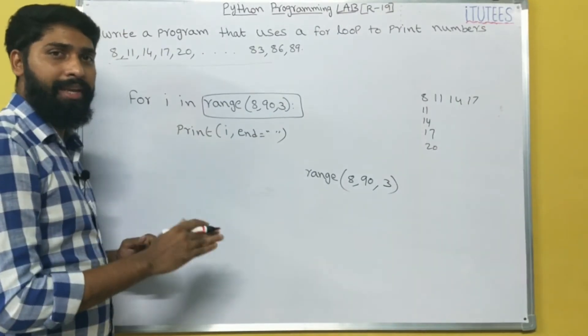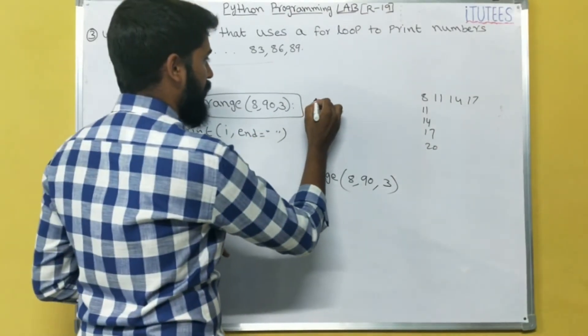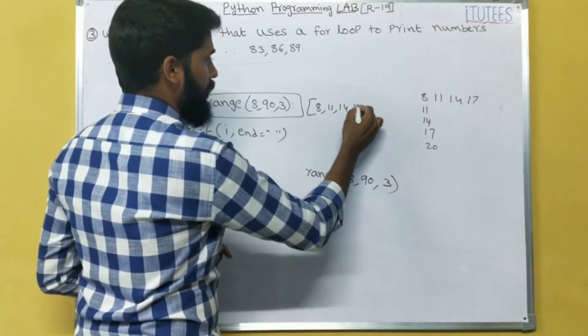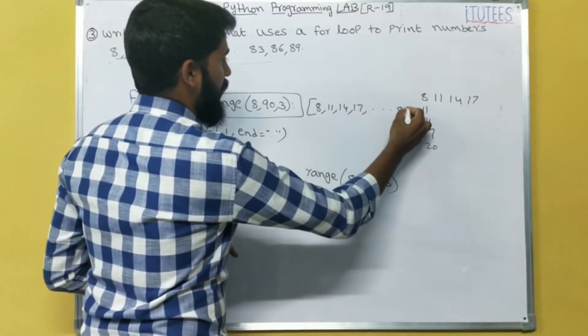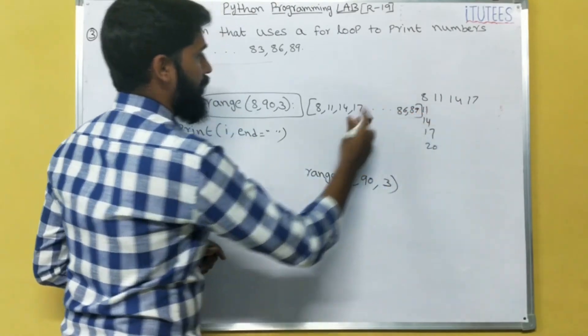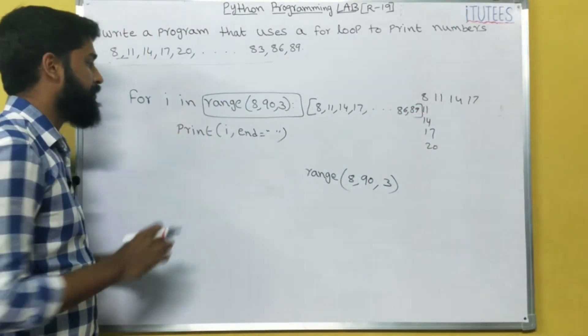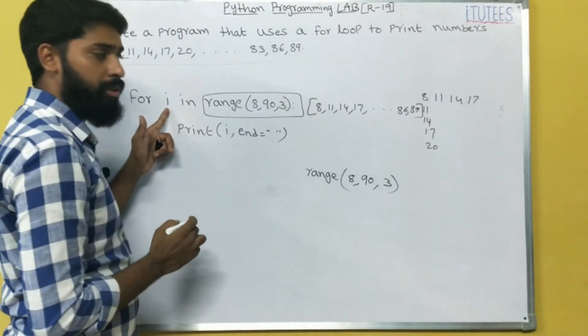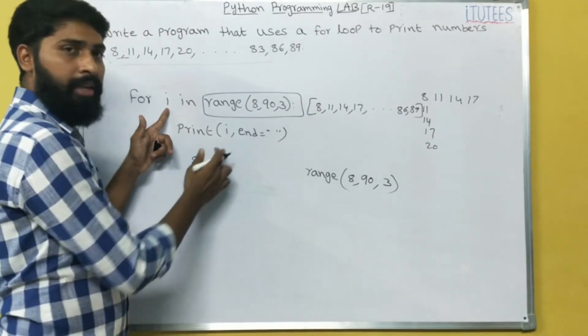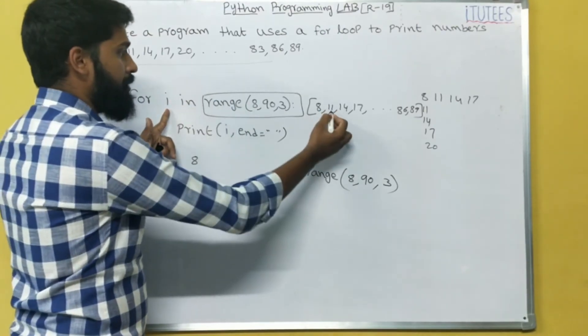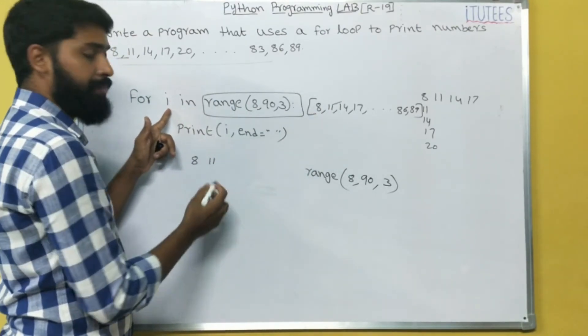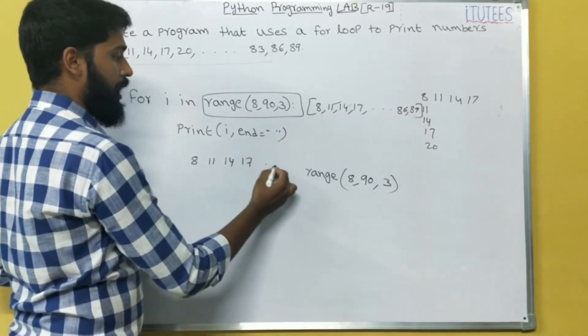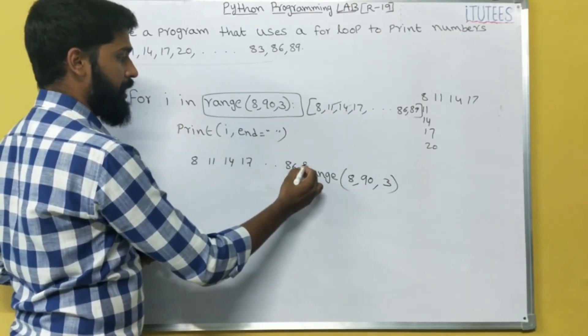For each sequence in this range. What is the range of this function returns? This function returns a sequence of numbers. What are the numbers? 8, 11, 14, 17, so on, 86, 89. These are the numbers returned by this function range. Now initially the I becomes I equals to 8, 8 is printed. In next iteration, I becomes 11, 11 printed. In next iteration, I become 14. In next iteration, 17, and so on. It prints 86, 89.